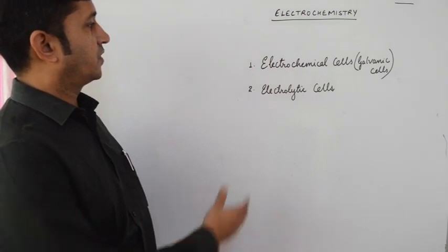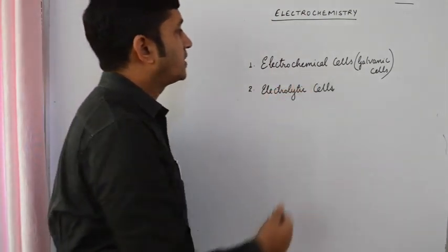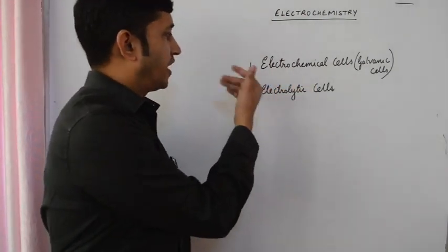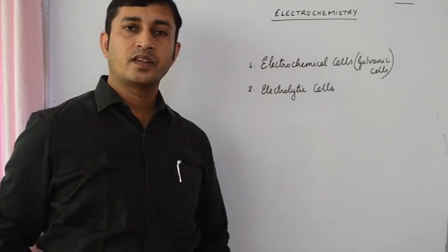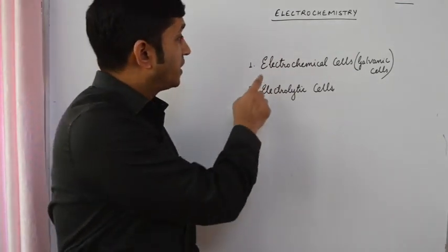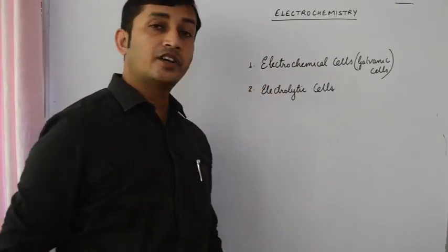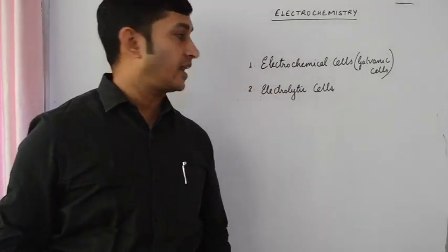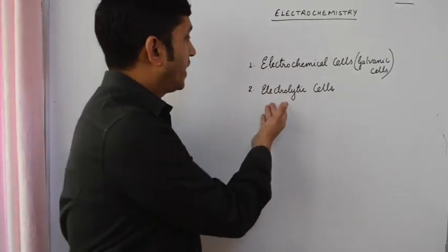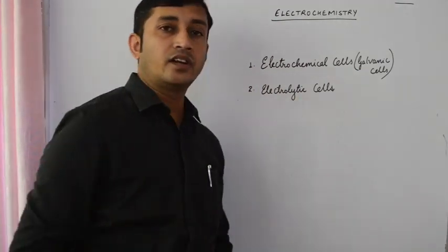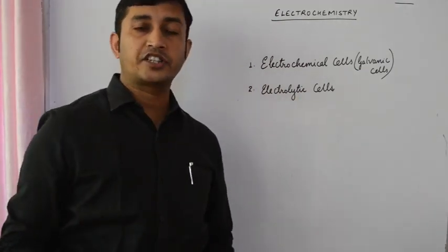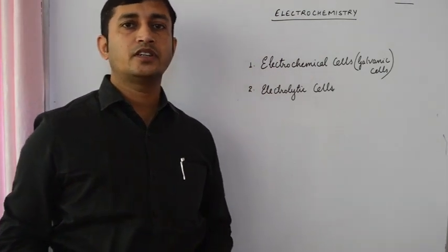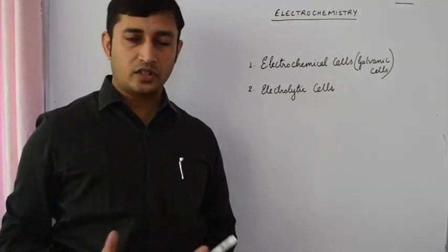In this chapter we are going to study about two types of cells: electrochemical cells or galvanic cells, and electrolytic cells. Electrochemical cells convert chemical energy to electrical energy. On the other hand, electrolytic cells convert electrical energy into chemical energy.